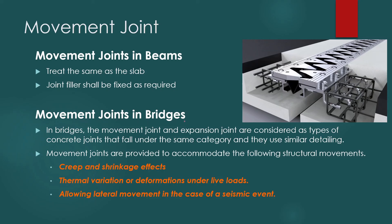Now, let us discuss Bridge Movement Joints. This is the most common type of joint in bridge construction. In continuous bridges, we always see joints, and they can be treated differently. Movement Joints are provided in bridges to accommodate the following: creep and shrinkage effects on the bridge, thermal variations, deformation under live loads, and to allow lateral movement in case of a seismic event. In these kinds of situations, we need to have movement joints in bridges.